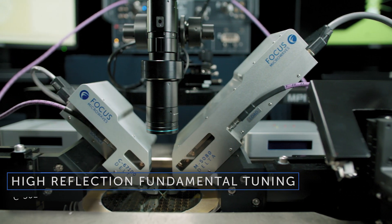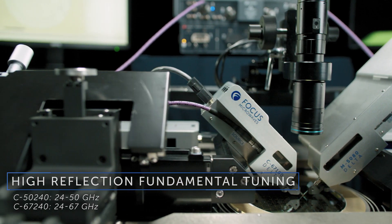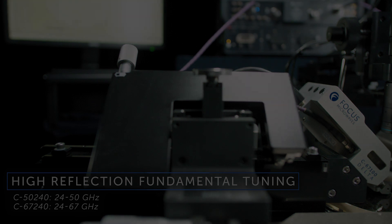For measurements in the 24 to 50 and 67 GHz ranges, a special subset of tuner models exists to obtain maximum gamma at 5G frequencies.